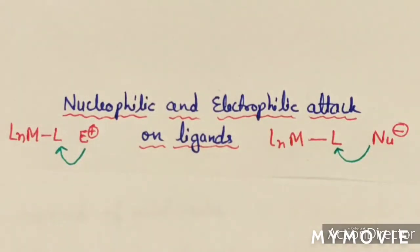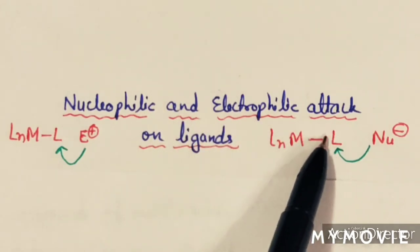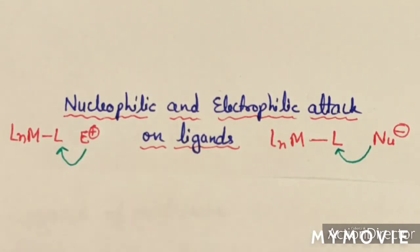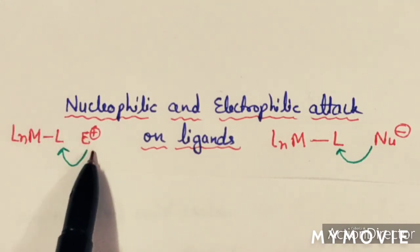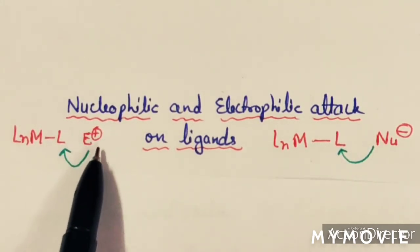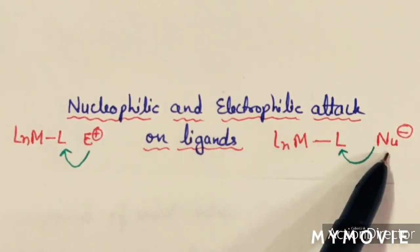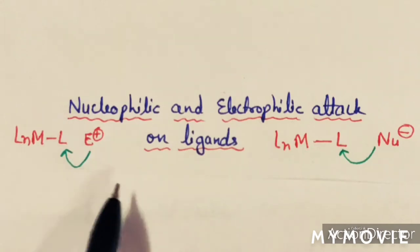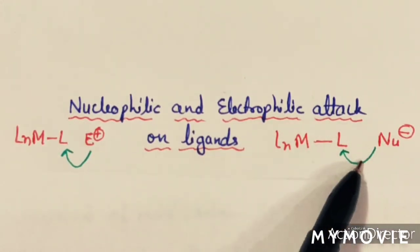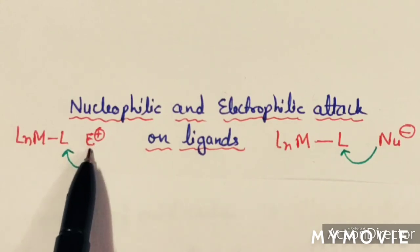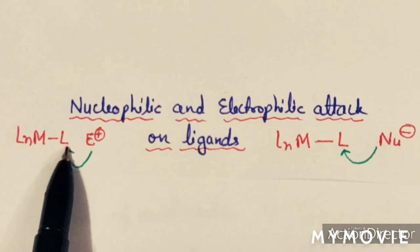Today we will discuss about nucleophilic and electrophilic attack on ligands — how nucleophiles and electrophiles attack on the ligands present in organometallic compounds. Electrophiles are generally electron-deficient species having a positive charge, while nucleophiles are electron-rich species that may have a negative charge. We are talking about reactions in which nucleophiles attack on the ligands attached to organometallic complexes, or electrophiles attack on the ligand attached to the metal.